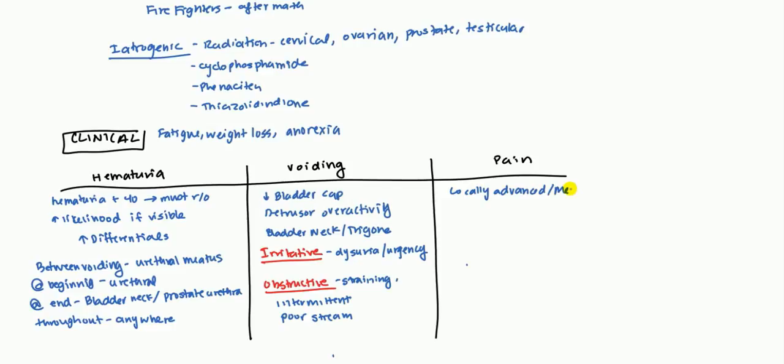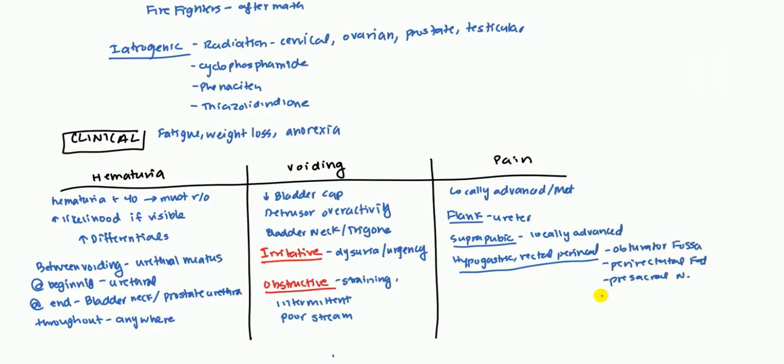Pain locally can suggest advanced or metastatic disease. If they have flank pain, then it probably suggests that maybe there's some type of obstruction of the ureter. Suprapubic probably means that's very locally advanced. It's growing really large, or maybe it's even extending into other tissues. If they have pain in the hypogastric, in the rectal area, or even in the perineal area, then that suggests extension. Either extension to the obturator fossa. It could also be extension maybe in the pararectal area, specifically the fat. It could even have gotten involved with the presacral nerve, which can cause all these symptoms. Or much lower the urogenital diaphragm, which will present as the perineal type of problem there.